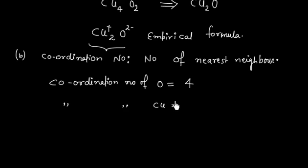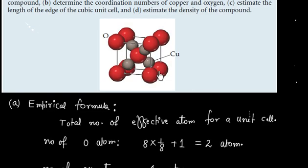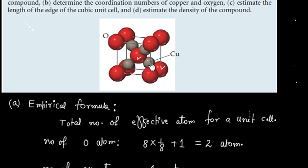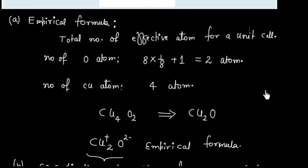Now let us calculate the coordination number of copper. This is the copper atom, and it seems this copper atom is touching this one oxygen atom, this is also touching this oxygen atom, and this is also touching this oxygen atom. This copper atom is not touching this oxygen atom. So the coordination number for copper is 2.